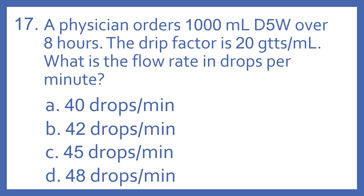Number 17. A physician orders 1,000 milliliters D5W over eight hours. The drip factor is 20 GTTs per mL. What is the flow rate in drops per minute?